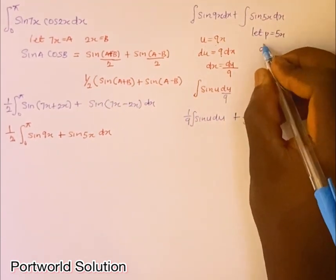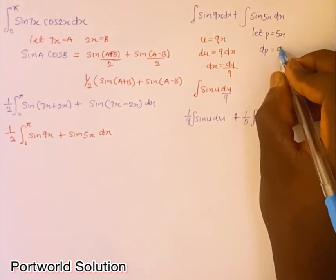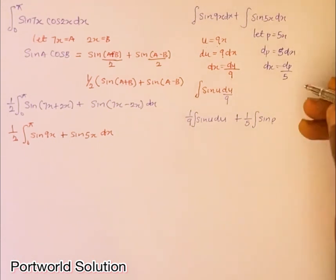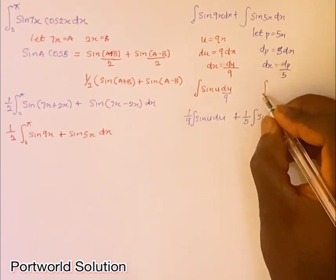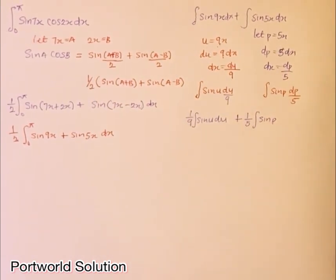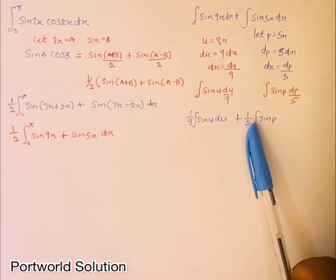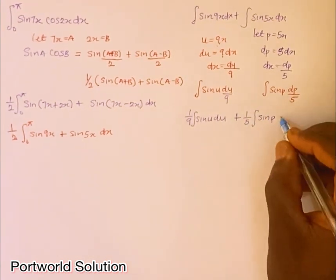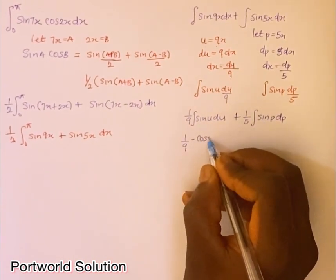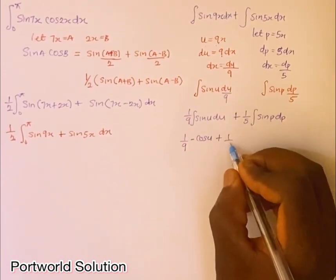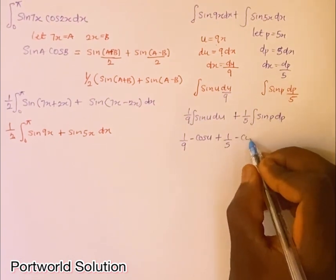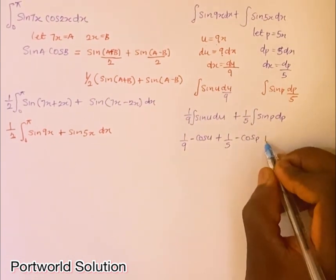For sin(5x), I use the substitution p = 5x, so dp = 5dx, meaning dx = dp/5. This gives me (1/5)∫sin(p)dp. Integrating both: the integral of sin(u) gives −cos(u), and the integral of sin(p) gives −cos(p). So I get (1/9)(−cos(u)) + (1/5)(−cos(p)).